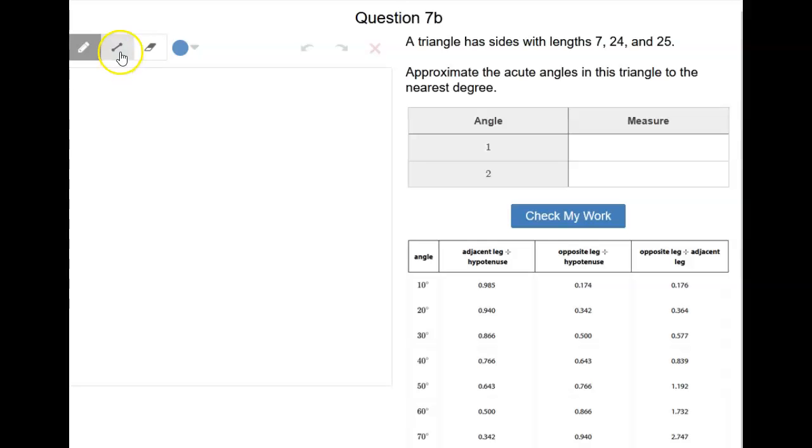So this is the same triangle that we're working with in the previous question, or the previous part of this question. And so we know that this is a right triangle.